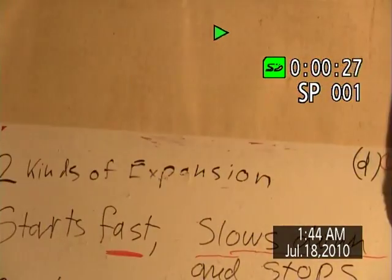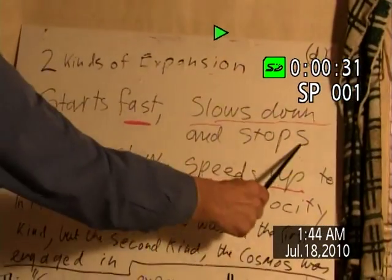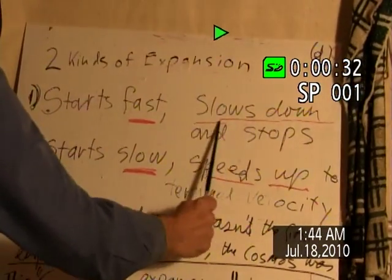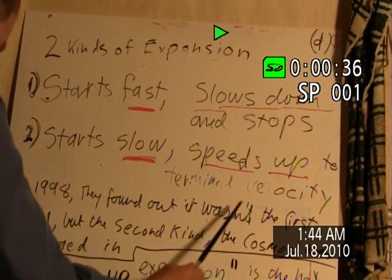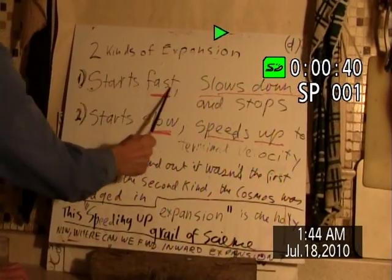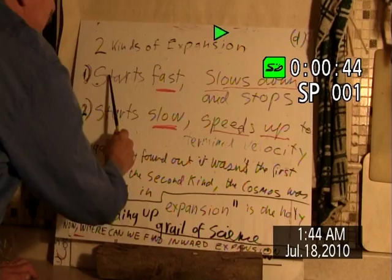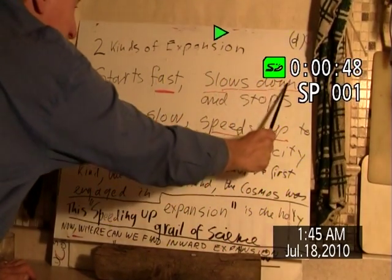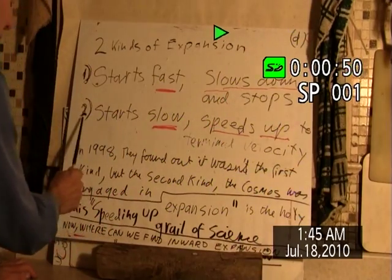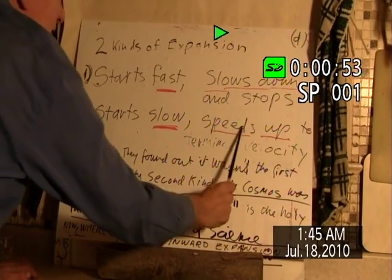Now, there are two kinds of expansion. One starts fast and slows down. The other one starts slow and speeds up. These are opposites. This is an outward expansion. All outward expansions, say like an explosion, start fast, slow down, and stop. All inward expansions start slowly and speed up.